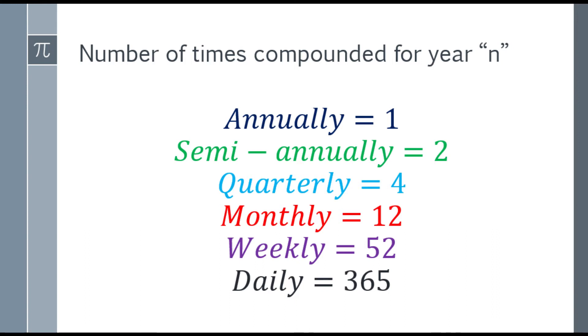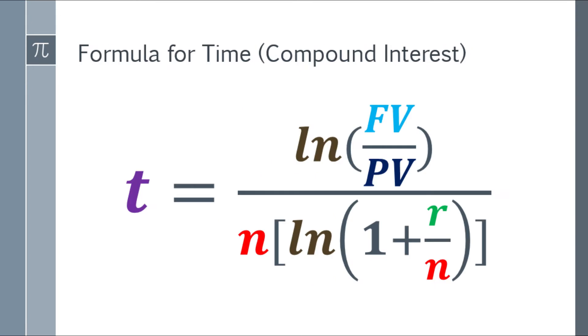What is the number of times compounded per year, or the variable N? Let's review it again. Annually is 1, semi-annually is 2, quarterly is 4, monthly is 12, weekly is 52, and daily is 365.